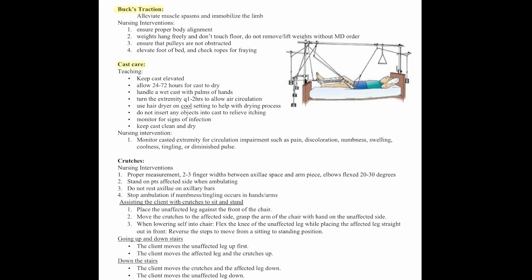For cast care, teaching includes: keep the cast elevated, allow 24 to 72 hours for a cast to dry, handle a wet cast with palms of hands, turn the extremity every one to two hours to allow circulation, use a hair dryer on a cool setting to help with drying. Do not insert any object into the cast to relieve itching — this is very important. Monitor for signs of infection and keep the cast clean and dry. Monitor the casted extremity for circulation impairment: look for pain, discoloration, numbness, swelling, coolness, tingling, and diminished pulse.